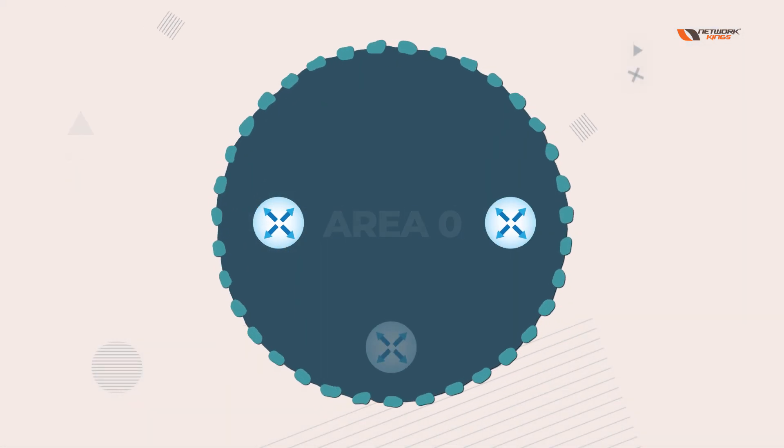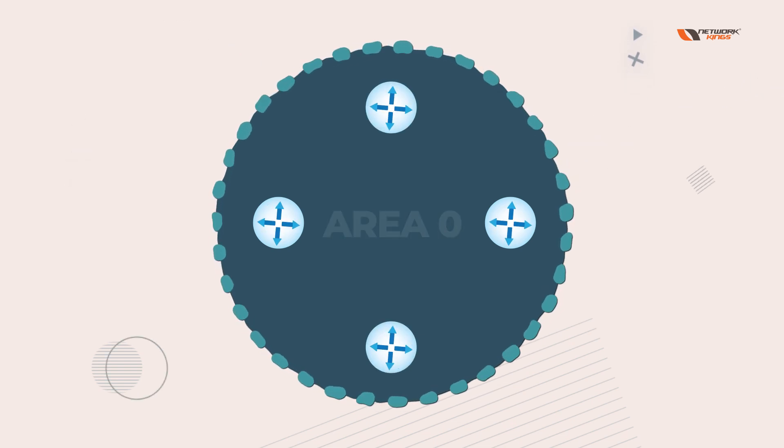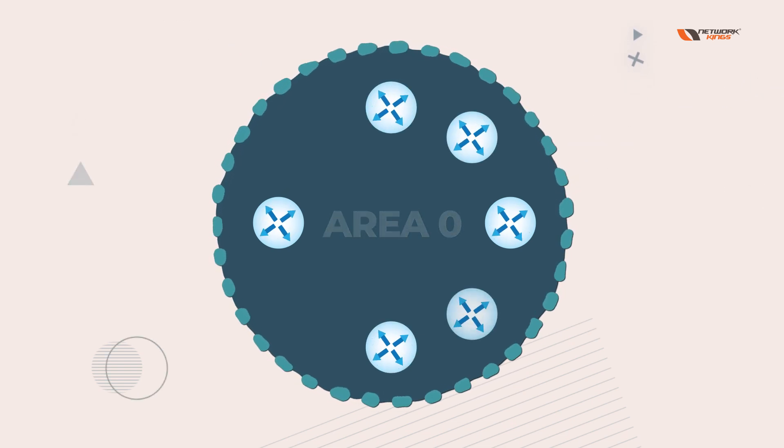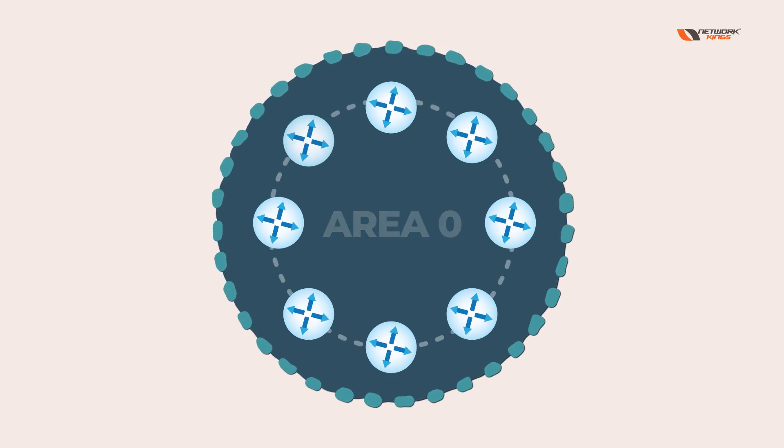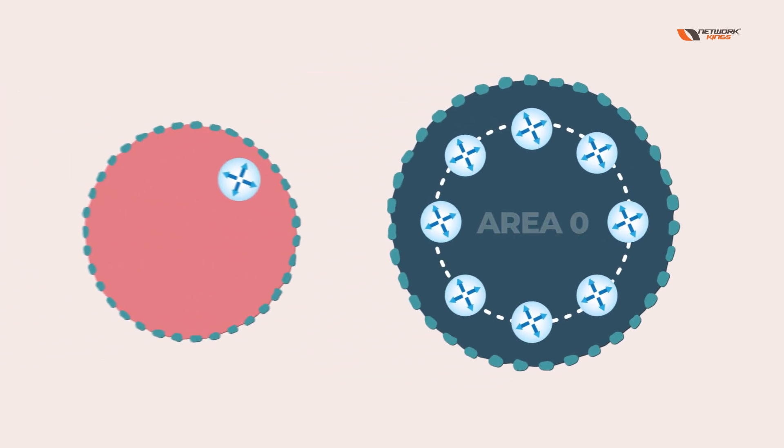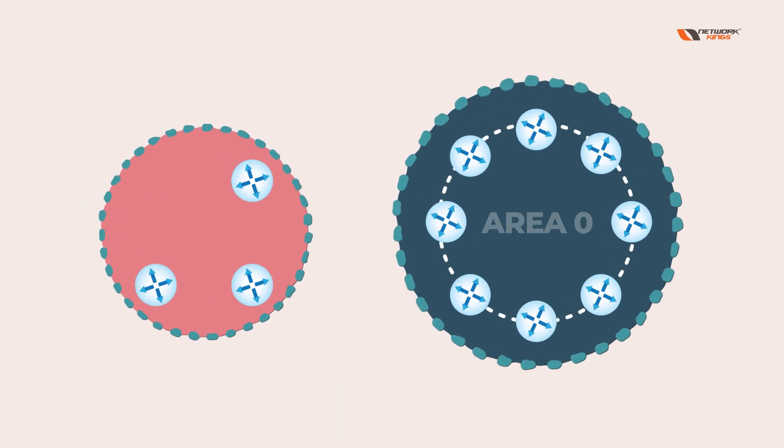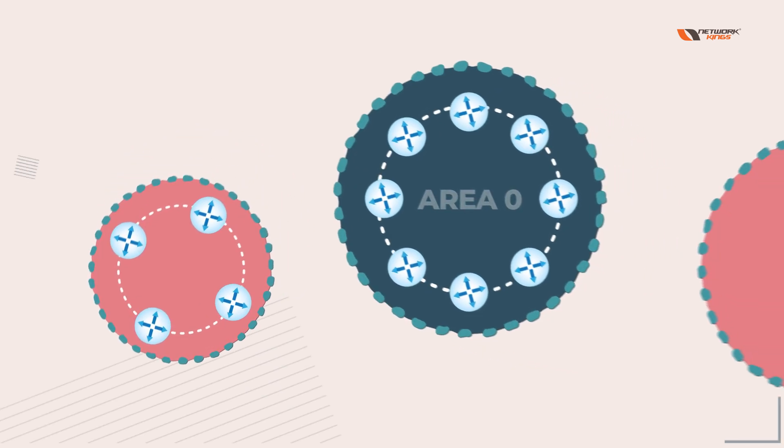This is Area 0. Cisco recommends having around 40 to 50 routers in one area, but usually we see 100+ routers in one area. It totally depends on your design.